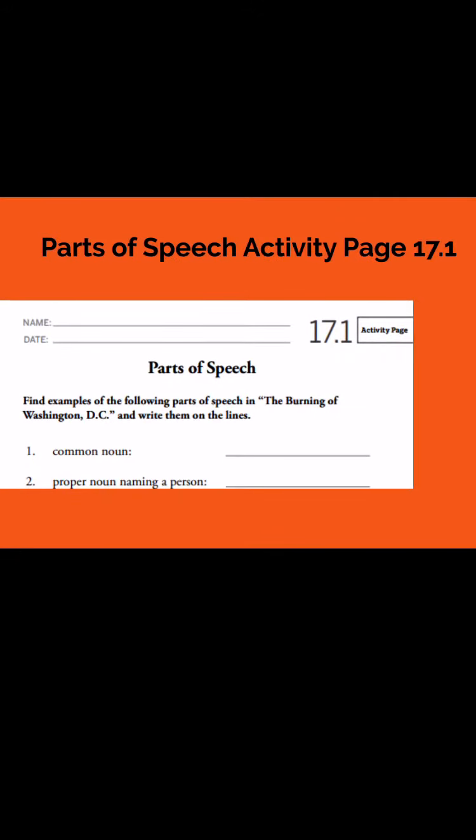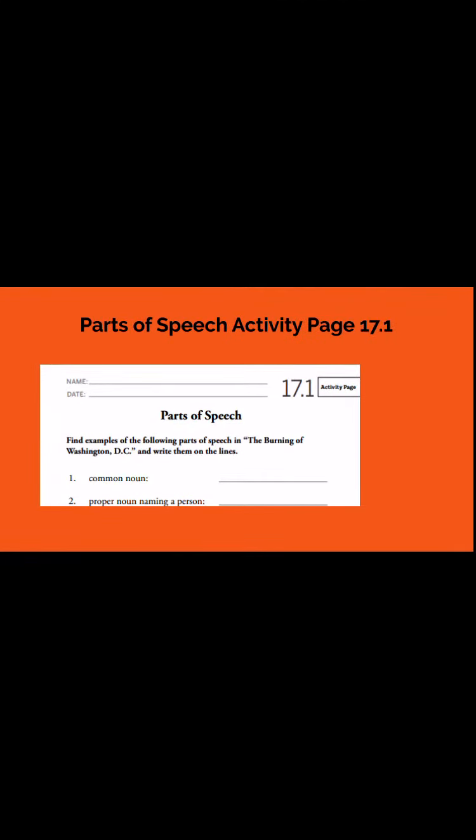On this page, you're going to hunt through the book and write down what they're asking for. For example, number one: common noun — you need to go through the chapter and find a common noun and write it down. Next, you're going to find a proper noun naming a person — like Dolly Madison, write it down. You can pause this video, complete this page, go through your chapter, read your story, and then move on. Or do it at the end — whatever works best.